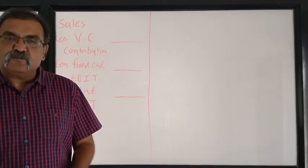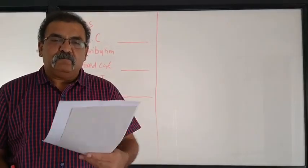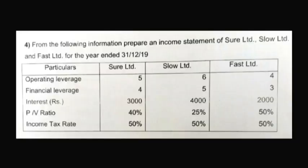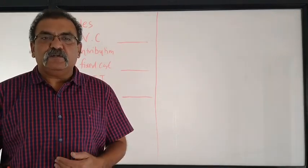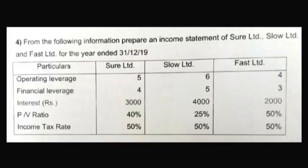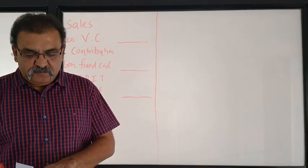Hello friends, today we will solve example number four. From the following information, prepare the income statement of Sure Limited, Slow Limited, and Fast Limited - three companies. The given information includes operating leverage, financial leverage, interest amounts (Rs. 3000 for Sure Limited, 4000 for Slow Limited, and 2000 for Fast Limited), profit volume ratio, and income tax rate.